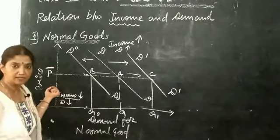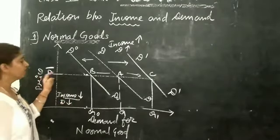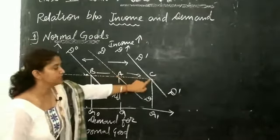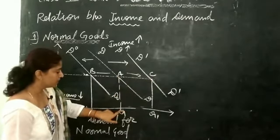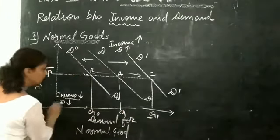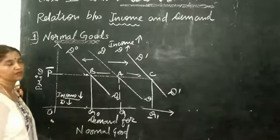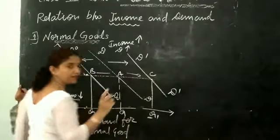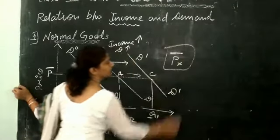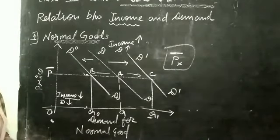We are not considering a change in price — we are considering change in income only. The price remains constant. So for the same price, with an increase in income, the consumer moves from point A to point C and demands Q1 instead of Q. This is all because of the increase in income.